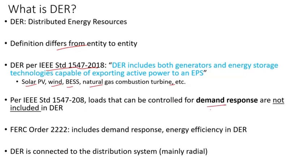IEEE 2222 includes demand response — basically this is load that can be controlled — as part of demand response. Energy efficiency is also in DER. DER is connected to distribution systems, mainly a radial network.